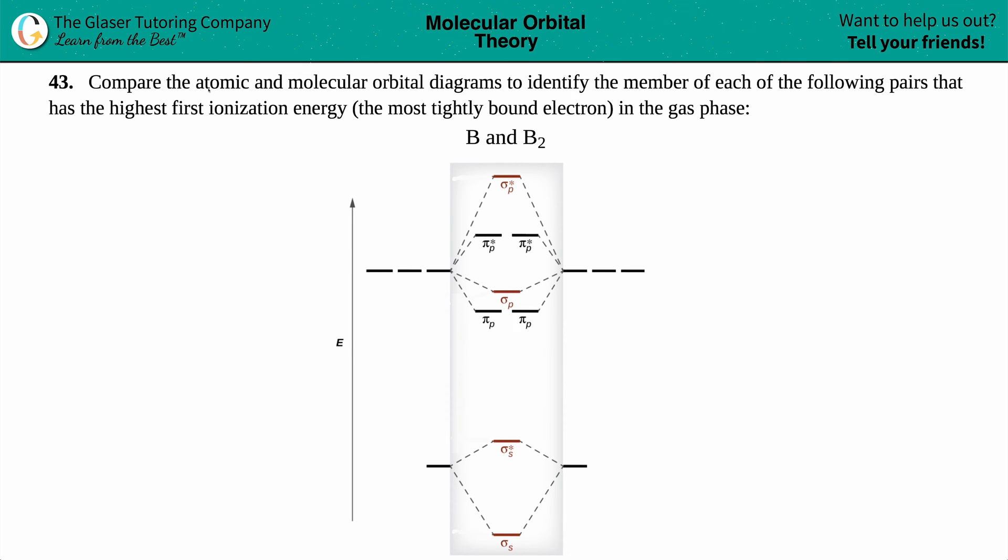Number 43, compare the atomic and molecular orbital diagrams to identify the member of each of the following pairs that has the highest first ionization energy, the most tightly bound electron in the gas phase. And then we have to decide whether B boron or B2 is going to have the highest first ionization energy.